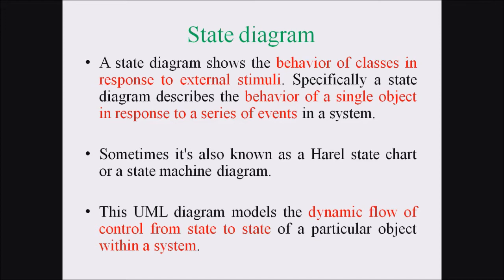A state diagram shows the behavior of classes in response to external stimuli. Specifically, a state diagram describes the behavior of a single object in response to a series of events in a system. It is also known as a Harel state chart or state machine diagram. This UML diagram models the dynamic flow of control from state to state of a particular object within a system.